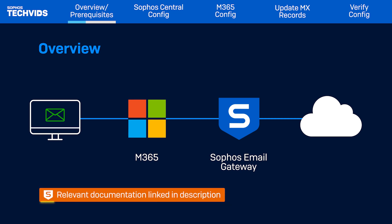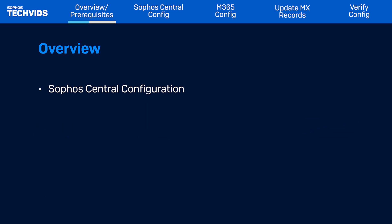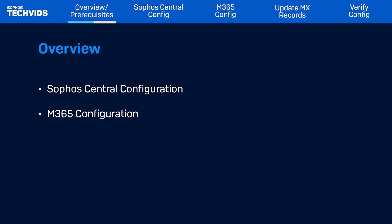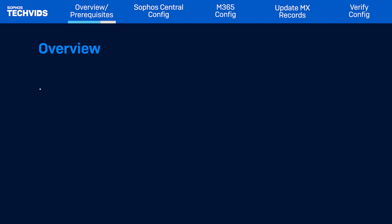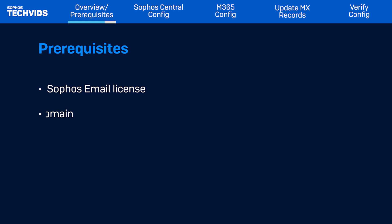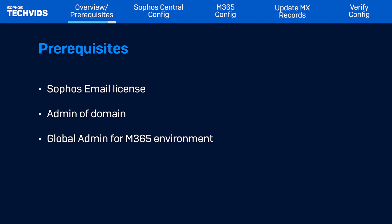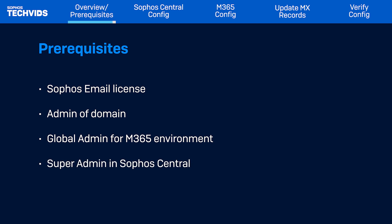Refer to our linked documentation for details about other clients. I'll cover the inbound configuration steps in Sophos Central, the steps in Microsoft 365, then I'll show you how to update your MX records and finally verify your inbound configuration. Before you start, you must have a Sophos email license, you must be the administrator of the domain, you must also be the global admin of the M365 environment, and finally you must be a super admin in Sophos Central.